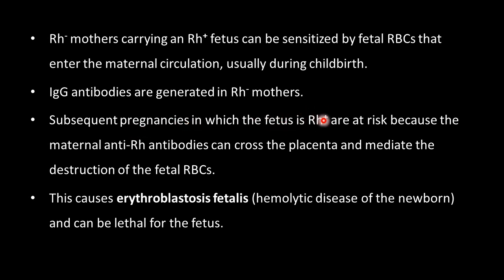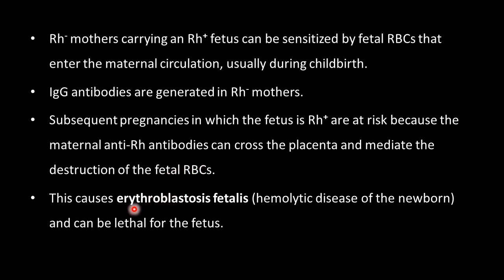These IgG antibodies are generated during the second or subsequent pregnancy. If the fetus is again Rh positive, the second fetus is at risk because the maternal anti-Rh IgG antibodies can cross the placenta and mediate the destruction of the fetal RBCs. This destruction of fetal RBCs is called erythroblastosis fetalis, also known as HDN — hemolytic disease of the newborn — and may be serious or lethal for the fetus.